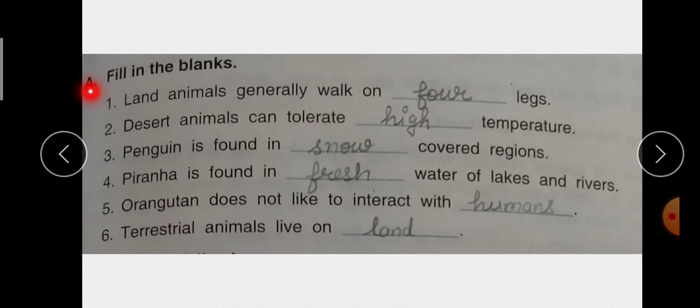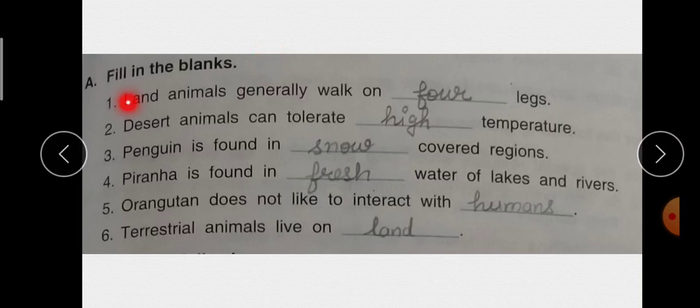First is A part that is fill in the blanks. And first fill up is land animals generally walk on dash legs. कि जो land animals generally कितनी legs पे walk करते हैं? तो answer है फेटा 4. Second है desert animals can tolerate dash temperature. कि जो desert animals हैं कैसे temperature को tolerate करते हैं? Answer है high temperature.